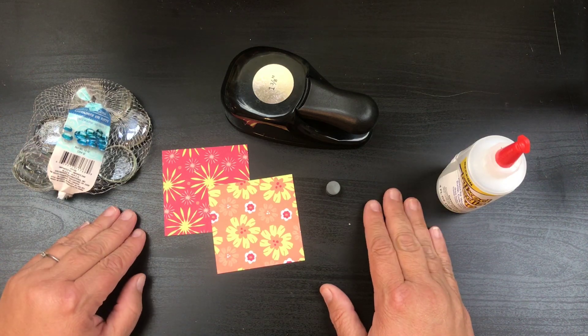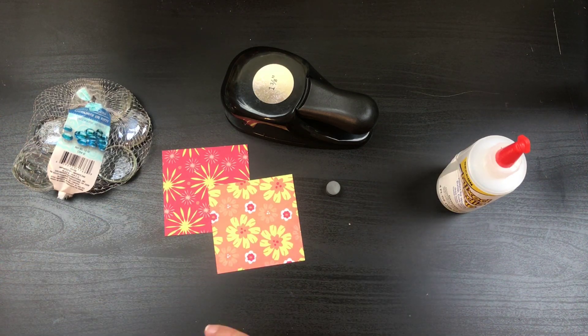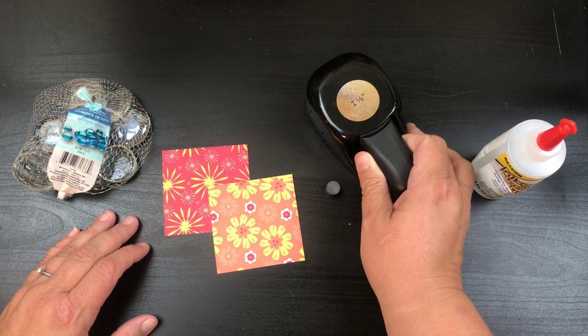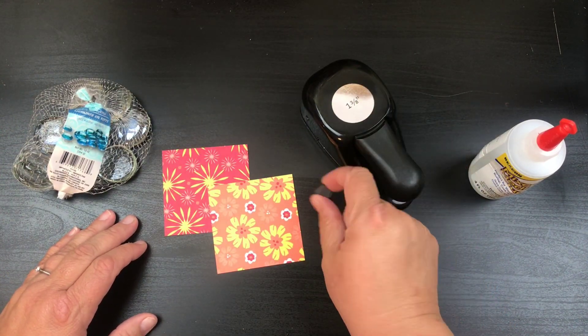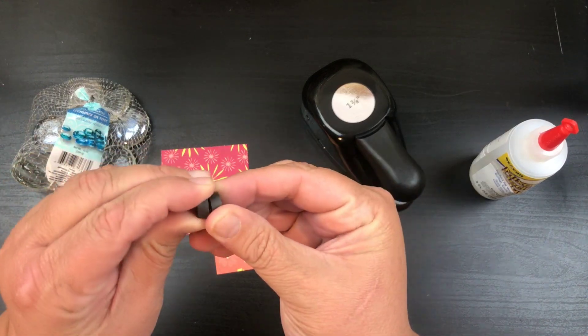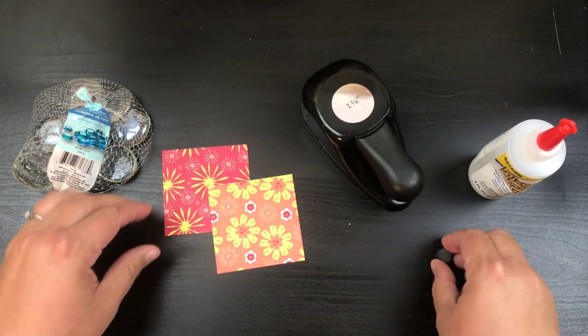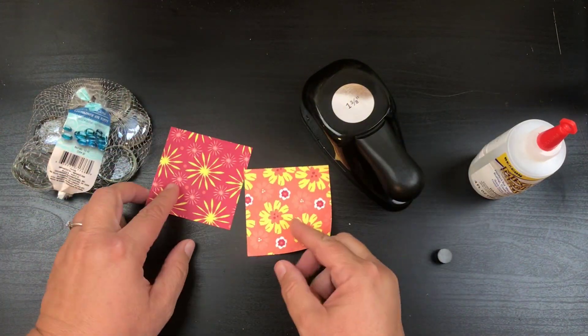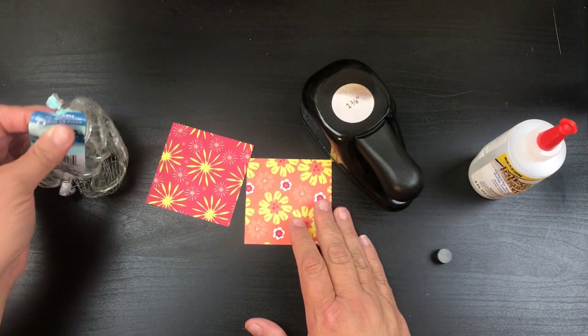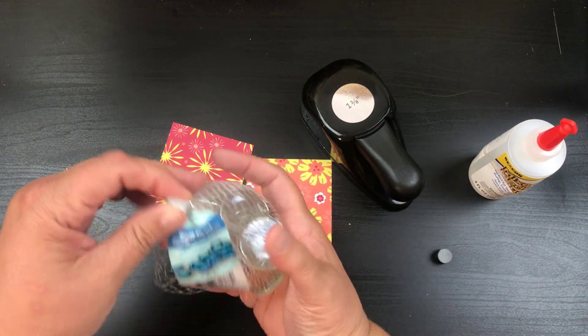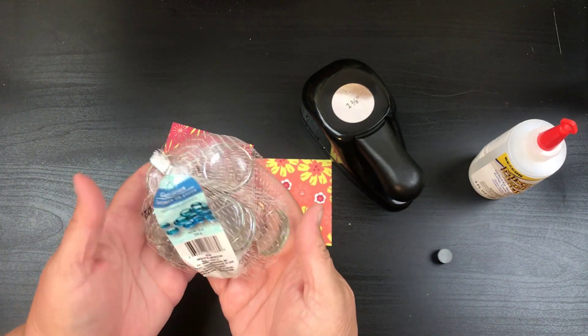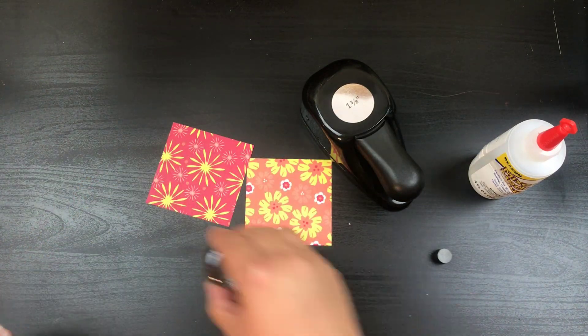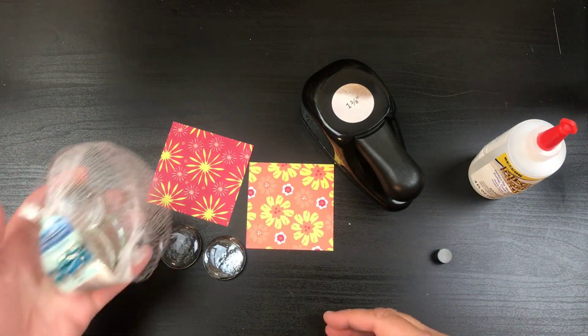Super quick, super easy. I'm going to use a one and three-eighths inch circle punch. I've got a couple of magnets here, some of my favorite paper, and then I got these little glass gems from the Dollar Tree. You get a whole big bag. I've already taken a few pieces out.